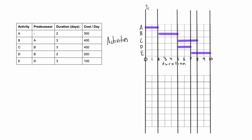Let's clean this up and label the periods: period one, period two, three, four, and period five. Now we want to break up the cost of each period per day. We'll track the period total cost and the cumulative cost right below it.